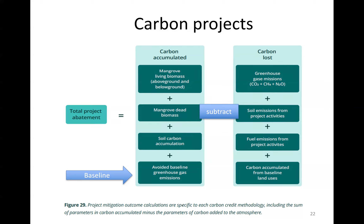The carbon lost includes greenhouse gas emissions from the mangrove — CO2, methane, and nitrous oxide — soil emissions from project activities (for example, if you had to dig out a bund wall or levee, you'd have to include those emissions), and fuel emissions — they matter, so you subtract those. Also subtract the carbon accumulated in the baseline land uses if that would have occurred.